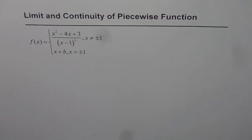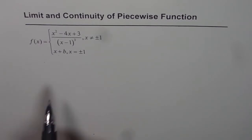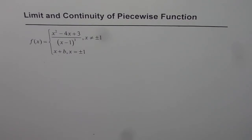Limit and continuity of a piecewise function. First of all, let me thank my viewers for watching these videos and posting some questions. This question is from a viewer. Let me discuss in detail so that I can explain and clear all your doubts. The question is: f(x) equals x squared minus 4x plus 3, divided by (x minus 1) cubed, where x is not equal to plus or minus 1. We will go in steps and try to analyze this kind of function.